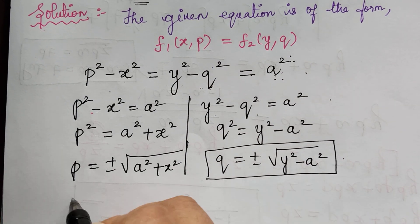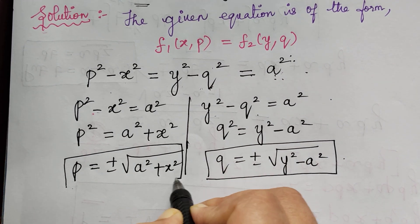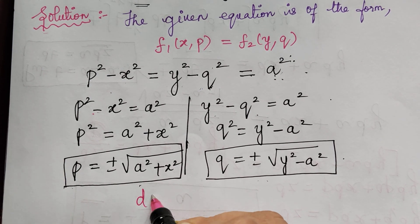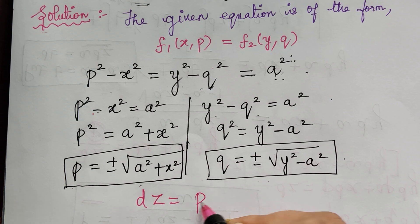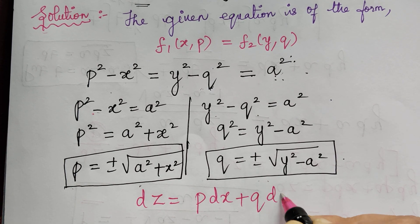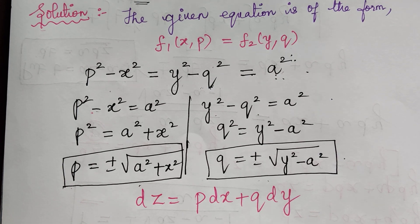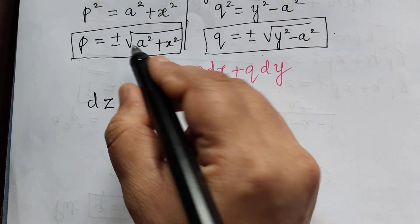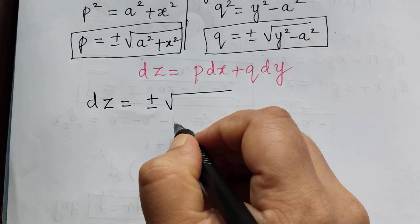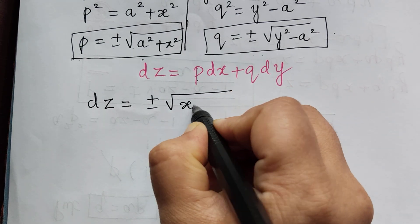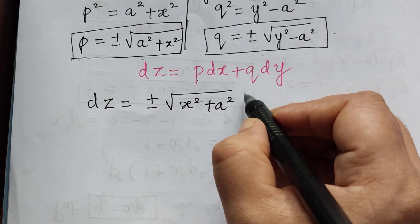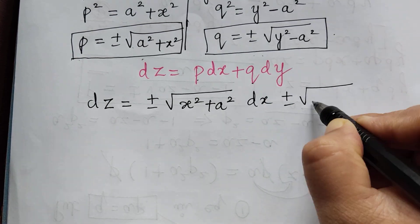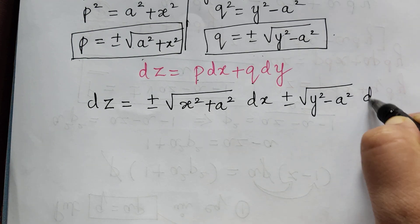We have obtained the value of p and the value of q. Now we have to substitute these into dz = p dx + q dy. So dz = ±√(x² + a²) dx ± √(y² − a²) dy.